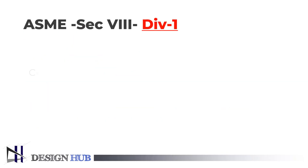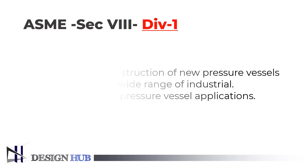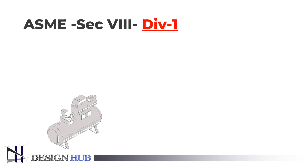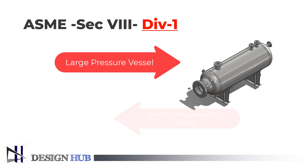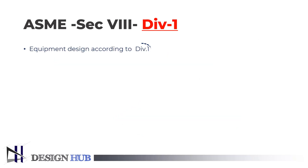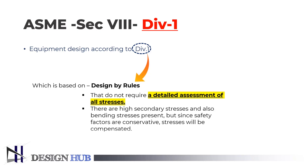ASME Section 8, Division 1, is created for the construction of new pressure vessels which cover a wide range of industrial and commercial pressure vessel applications. This applies to both small compressed air vessels and very large pressure vessels required by the petrochemical and refining industries. Types of equipment designed according to Division 1 do not require a detailed assessment of all the stresses, because of the compensation of stresses due to the conservative nature of safety factors.